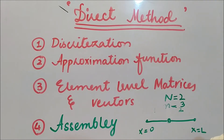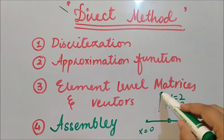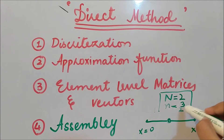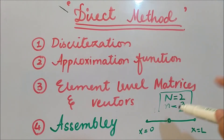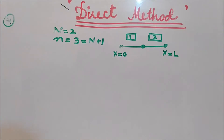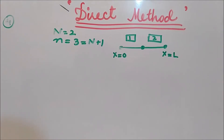The number of nodes is represented by small n, and the number of elements by capital N. So here we have small n equal to 3 and capital N equal to 2.